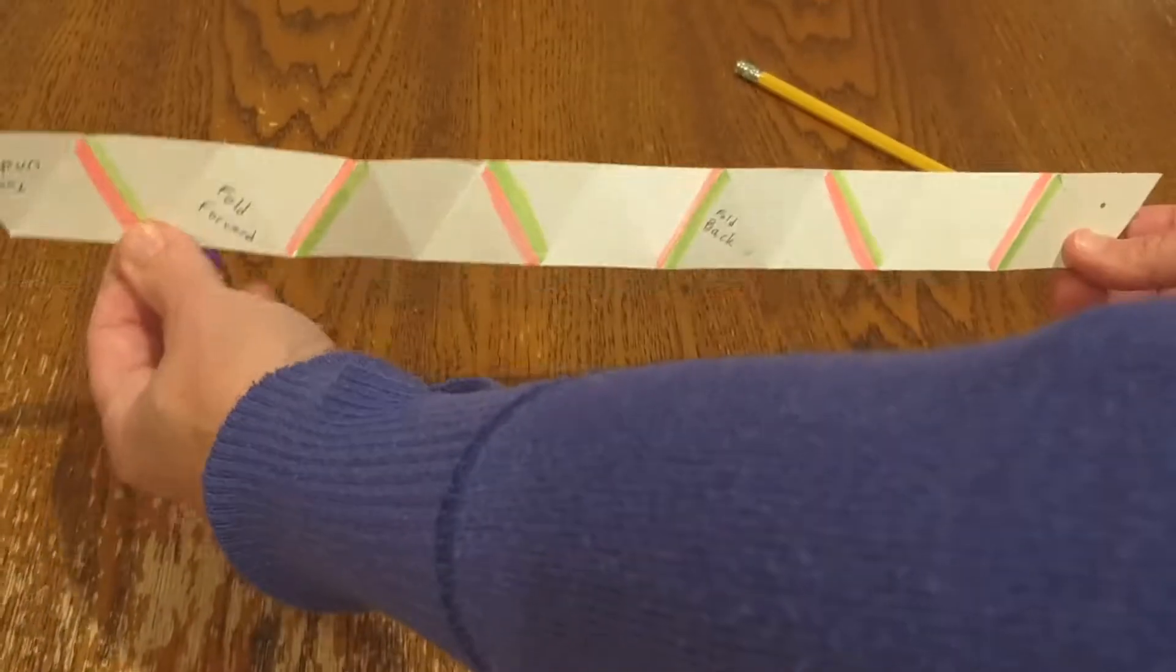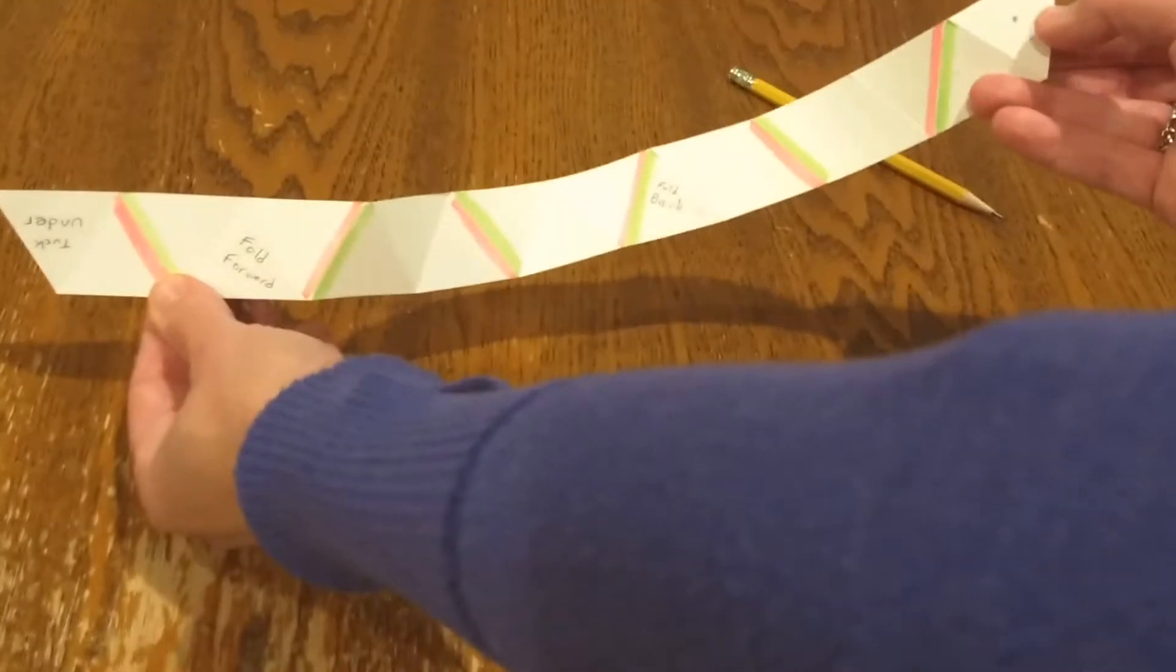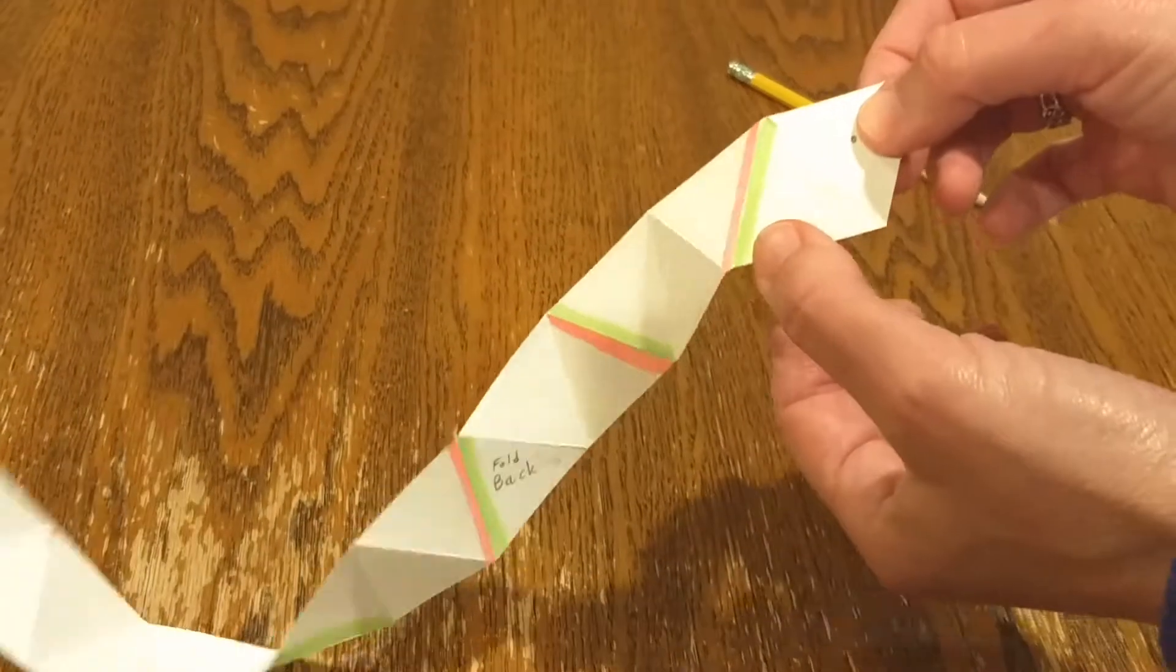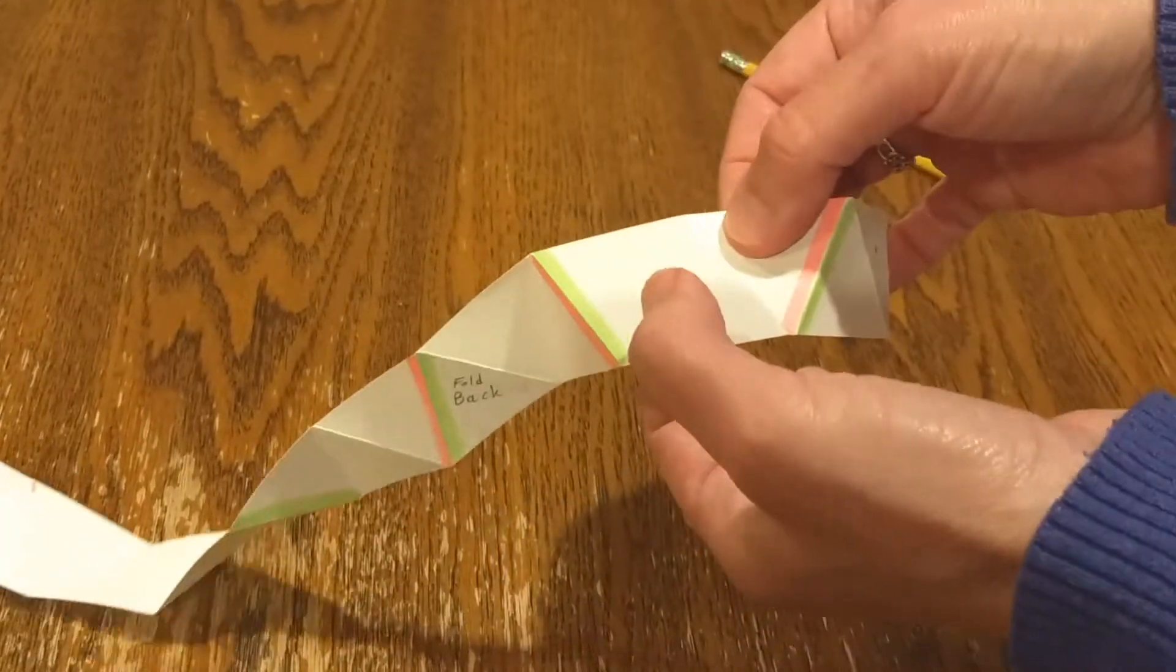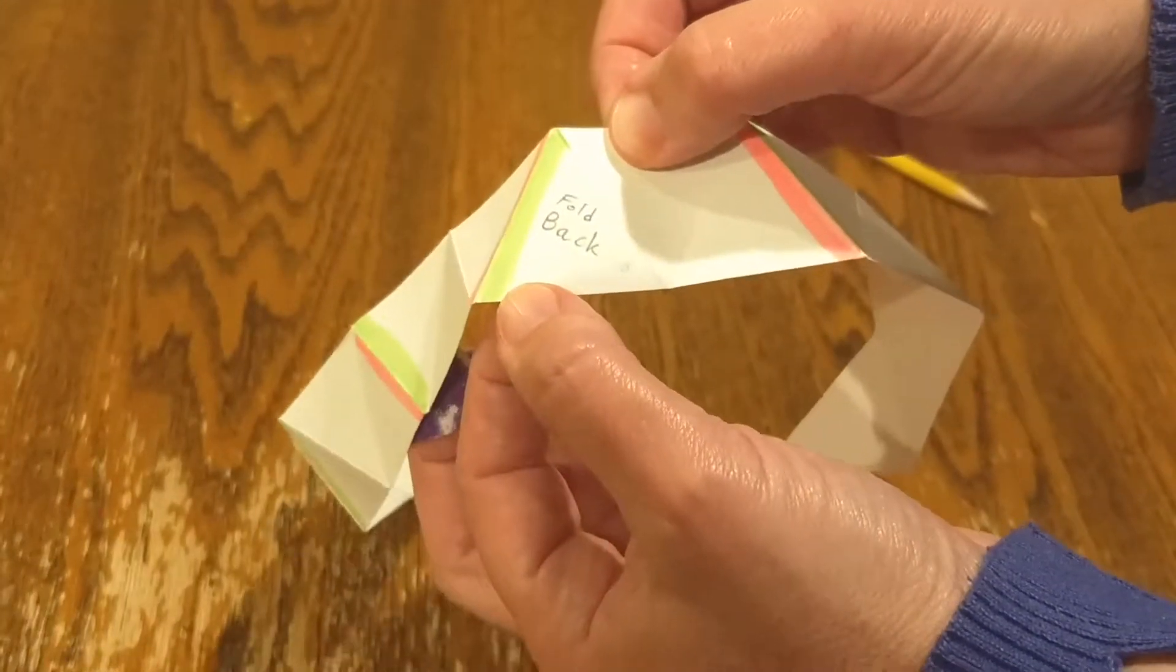So I've labeled this one, see how it's pointed up like a boat on the edges? Starting with this one, there's a dot right here, and then I count in 1, 2, 3, 4, 5, 6, 7, 8. That one I've labeled fold back.